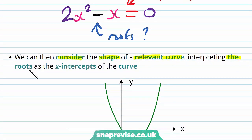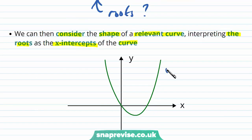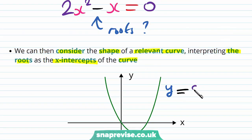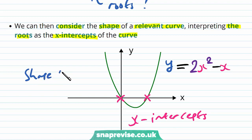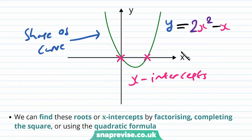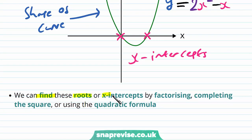We can find the roots of this equation and then consider the shape of the relevant curve, interpreting the roots as the x-intercepts of the curve y = 2x² - x. The shape and behaviour of the curve are important for solving the inequality. We can find these roots or x-intercepts by factorising, completing the square, or using the quadratic formula.